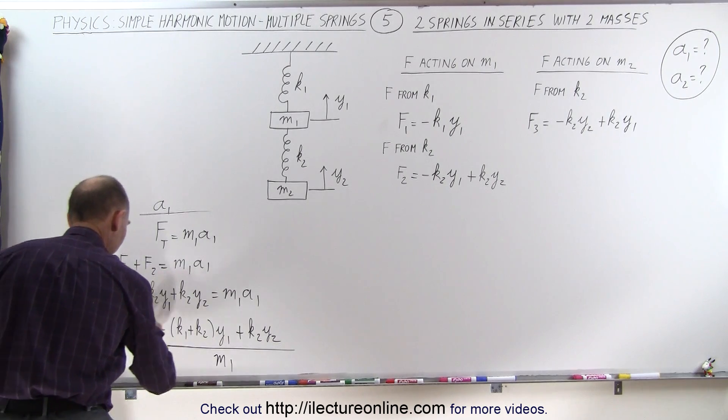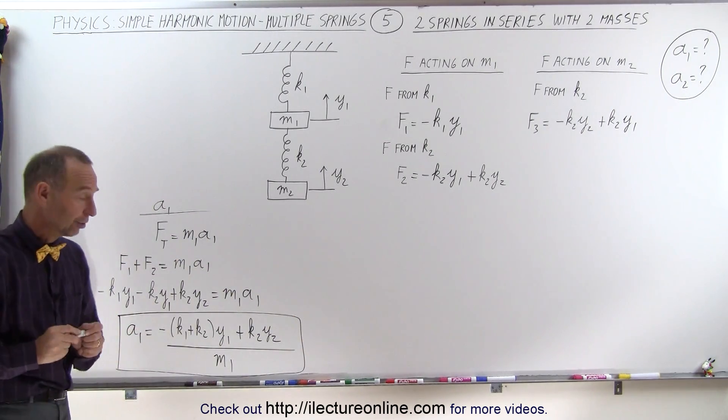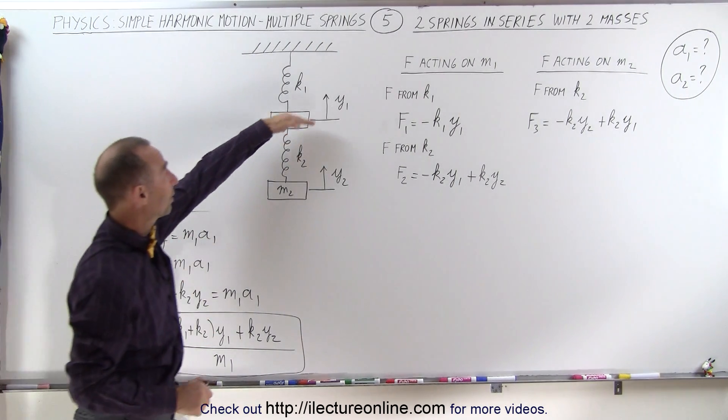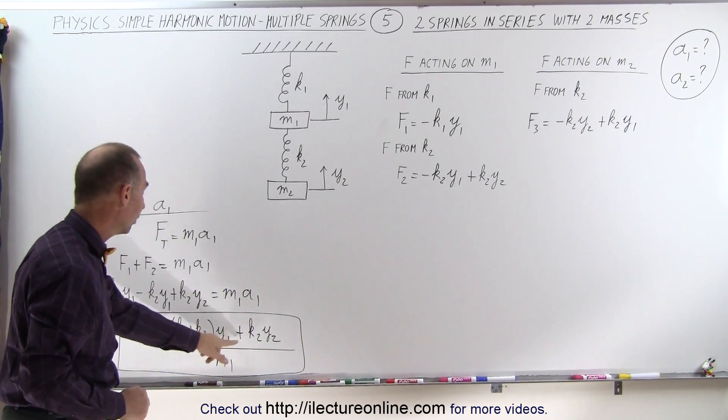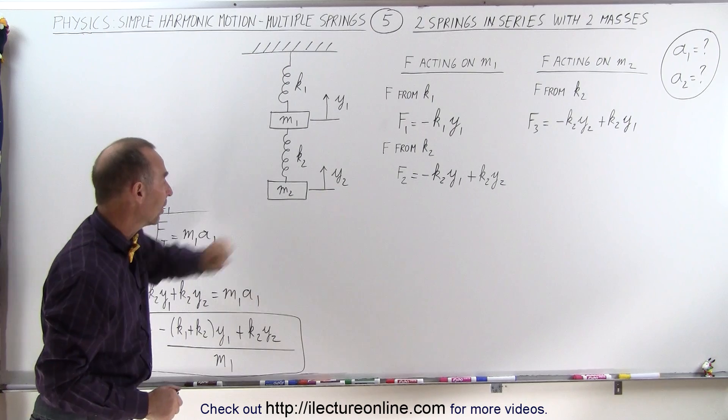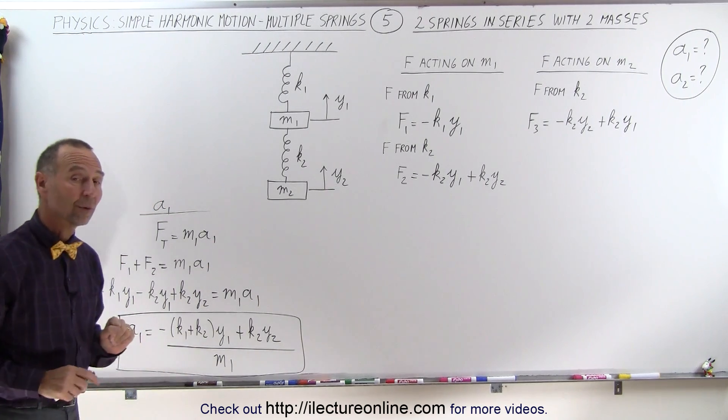We have a1 acceleration as a function of y1 and y2 is going to be equal to minus k1 plus k2 times y1 plus k2 times y2 all divided by m1. And so that will give me the acceleration on mass 1. Notice it's going to be minus the sum of the two k's times the displacement in the first mass plus the k constant k2 times the displacement of the second mass divided by m1. And that will give me the acceleration, a1.